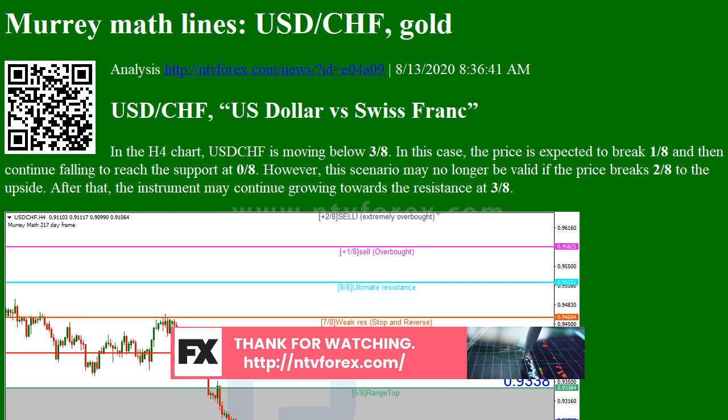XAUUSD — Gold vs US Dollar — as we can see in the H4 chart, XAUUSD is moving not far from 7.8. In this case, the price is expected to rebound from this level and resume falling to reach the support at 6.8. However, this scenario may no longer be valid if the price breaks 7.8 to the upside. After that, the instrument may continue growing towards the resistance at 8.8.